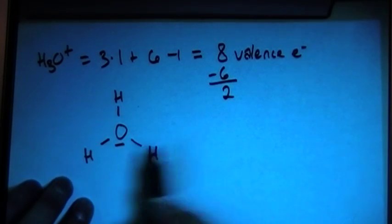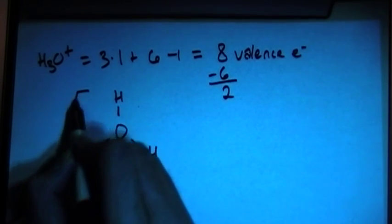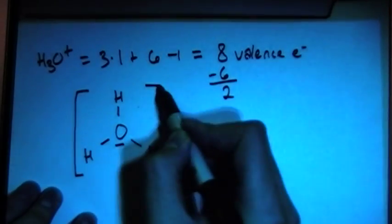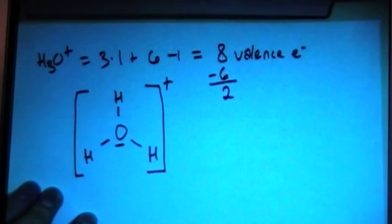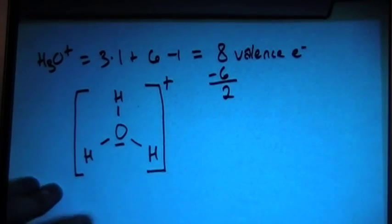So this should be the right structure, but then don't forget to add in the square braces, because it's an ion charged compound. And put the charge up there, so plus. Okay, so that's going to be the structure...